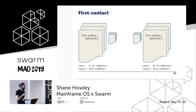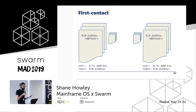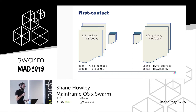Bob can use this data to discover the feed, decrypt it, and find out where the private communications will happen. Once Alice does this, she needs to see if Bob has reciprocated. She takes Bob's first contact address and hashes her own public key, then polls that location waiting for Bob to publish. Once Bob reciprocates, they both know about the two private feeds, which can be used for bootstrapping any further communications inside Mainframe OS.